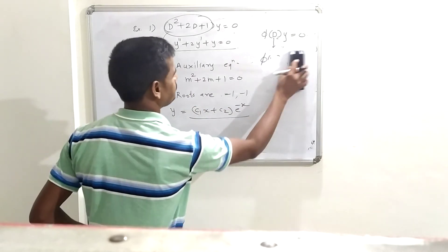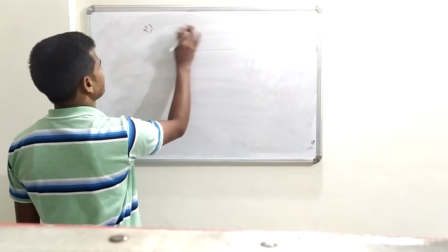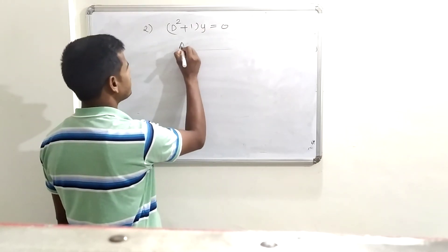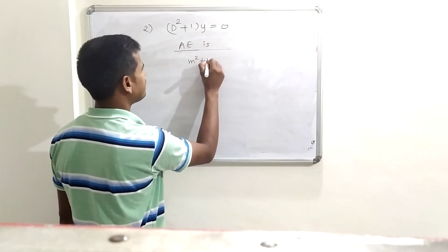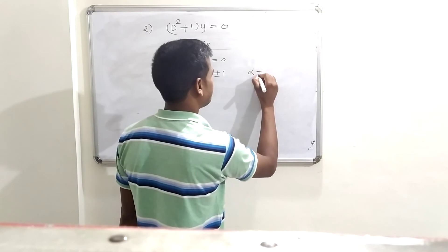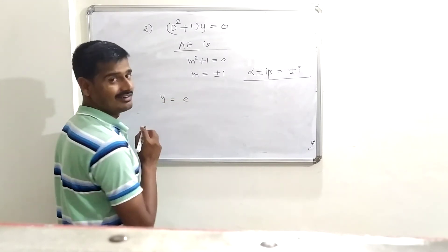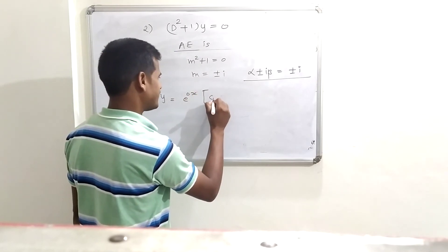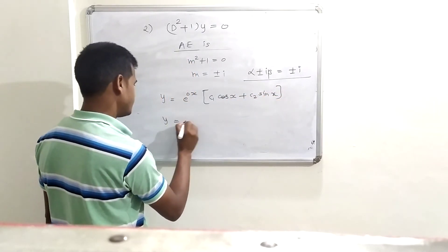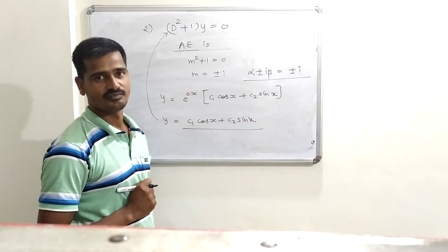Example 2: Solve (D² + 1)·y = 0. The auxiliary equation is m² + 1 = 0, giving roots m = ±i. Since the roots are complex with α = 0 and β = 1, the solution is: y = e^(0·x)·[c₁·cos(x) + c₂·sin(x)] = c₁·cos(x) + c₂·sin(x).